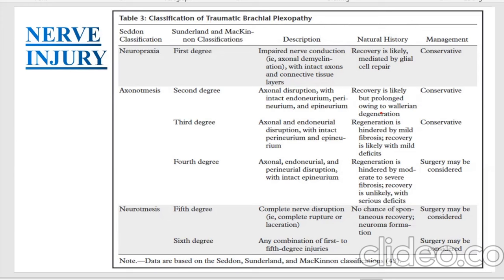In fourth degree, axonal, endoneurium, and perineurium disruption with intact epineurium is present. Regeneration is hindered by fibrosis, and surgery may be required.